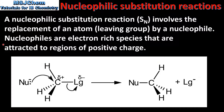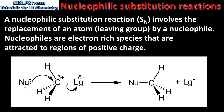As we saw in a previous video, nucleophiles are electron-rich species, therefore they are attracted to regions of positive charge. Here we can see a simplified mechanism for a nucleophilic substitution reaction. In the reaction we can see that the nucleophile, which is abbreviated as NU, is attracted to the carbon atom, which has a partial positive charge. This partial positive charge is caused by the difference in electronegativity between the carbon atom and the leaving group. The nucleophile uses a lone pair of electrons to form a bond with the carbon atom.